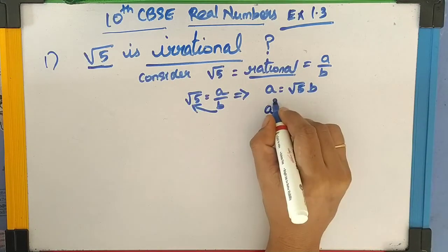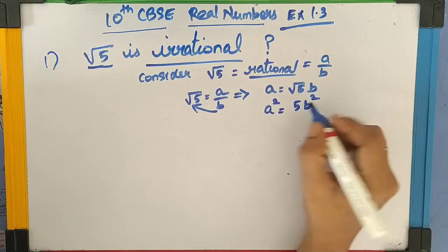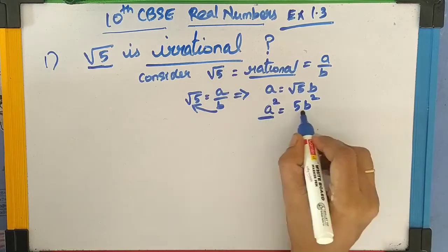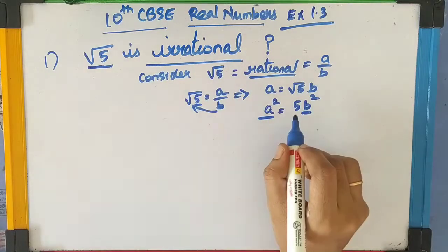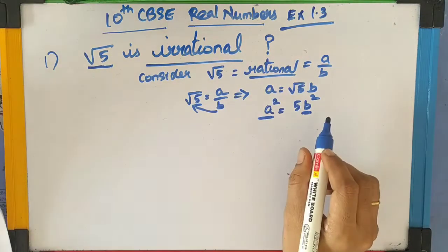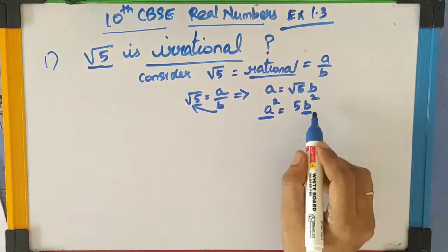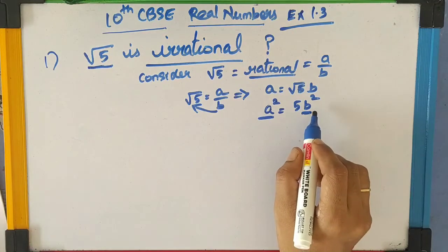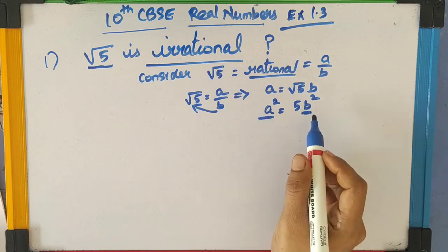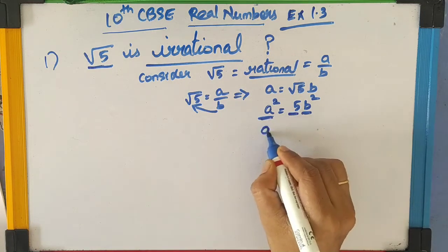What is A squared? A squared equals square root of 5 times B, the whole squared. That is 5B squared. Now, A squared is divisible by 5, so A is also divisible by 5. This follows from Theorem 3 — when A squared is divisible by 5, then A is also divisible by 5.